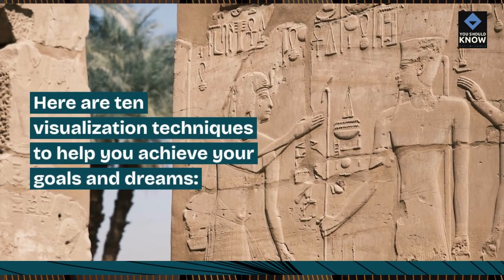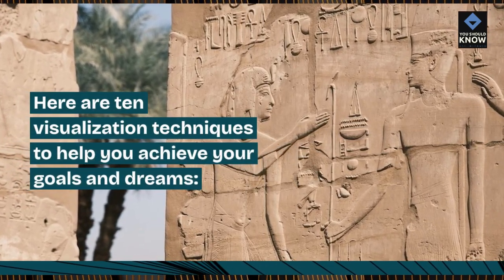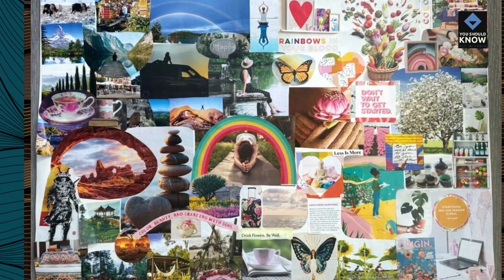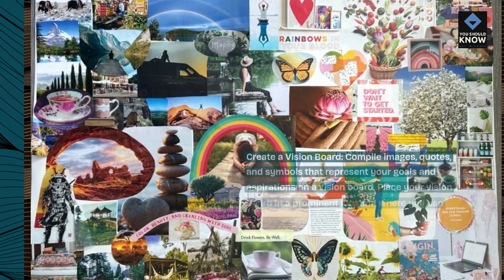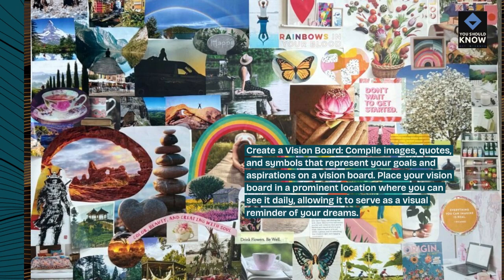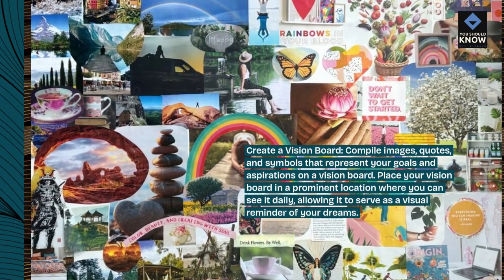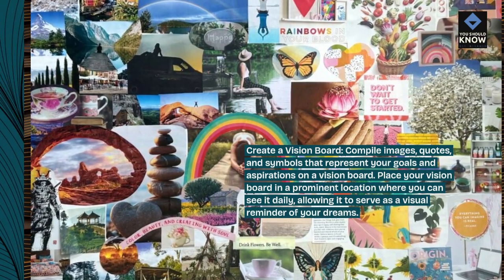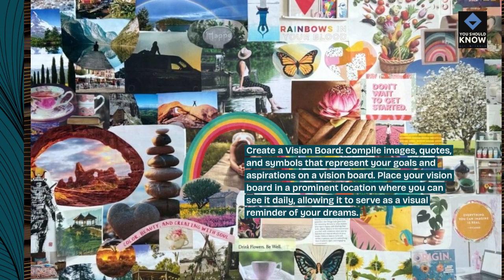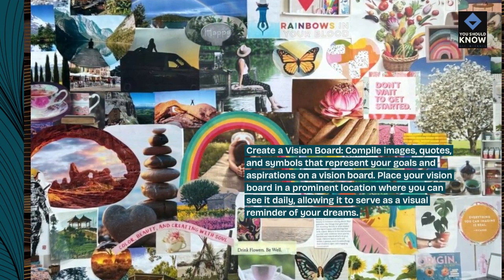Here are 10 visualization techniques to help you achieve your goals and dreams. Create a vision board. Compile images, quotes, and symbols that represent your goals and aspirations on a vision board. Place your vision board in a prominent location where you can see it daily, allowing it to serve as a visual reminder of your dreams.